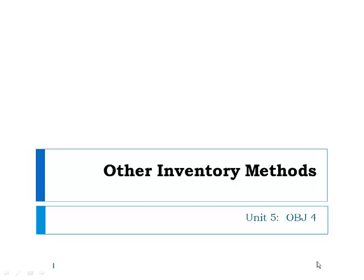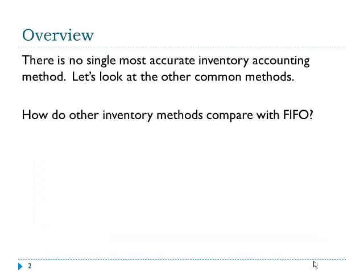Welcome to Objective 4 in Unit 5 of Accounting 3310. In this objective, we're going to look at the other inventory estimation methods. We've already looked at First In, First Out. There's no single most accurate inventory accounting method. Let's look at the other common accounting methods and how they compare with FIFO.